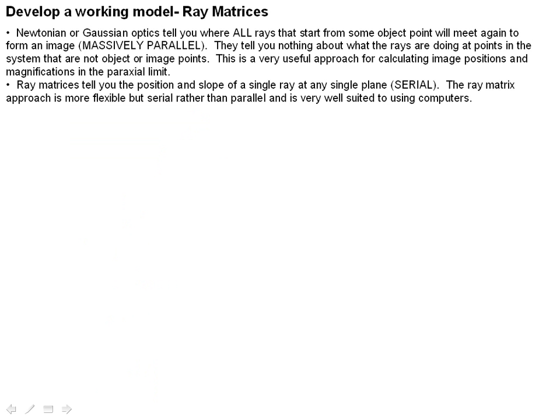If you use Newtonian or Gaussian optics, they essentially tell you, for some particular position, all the rays that start from an object point are going to meet again to form an image. It's a massively parallel approach, but they tell you nothing about what the rays are doing in points in the system. They're not object or image points. And it's a very useful approach for calculating image positions and magnifications.